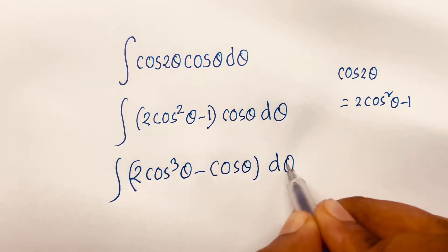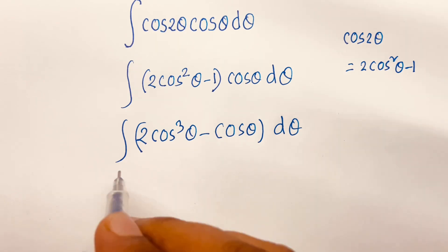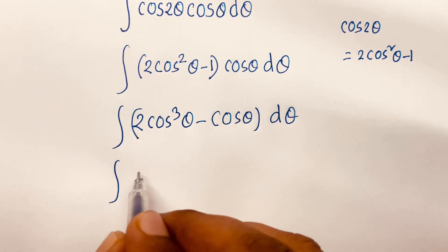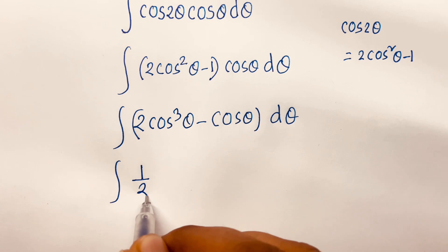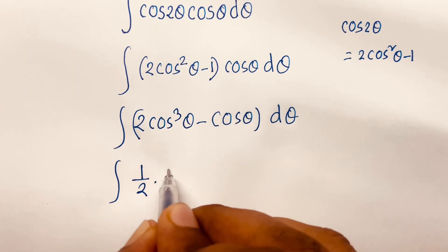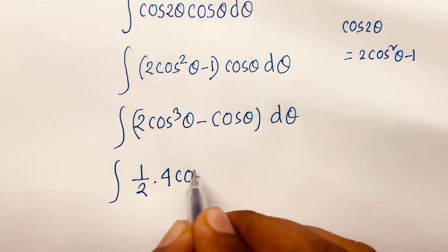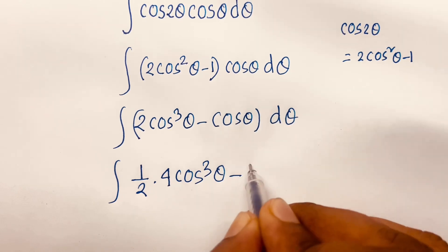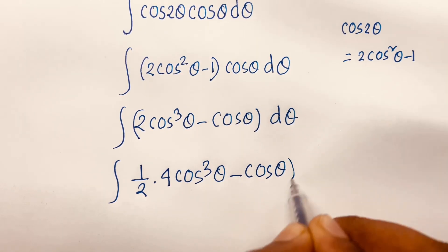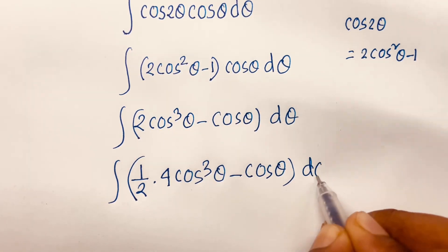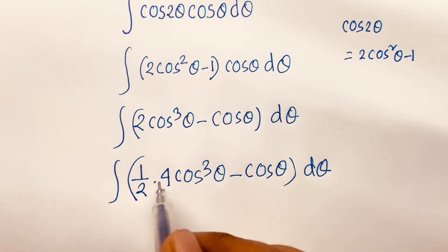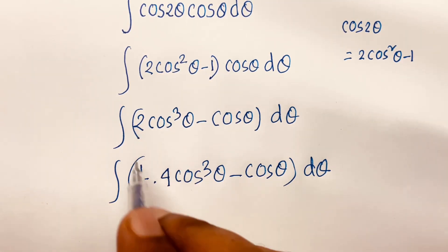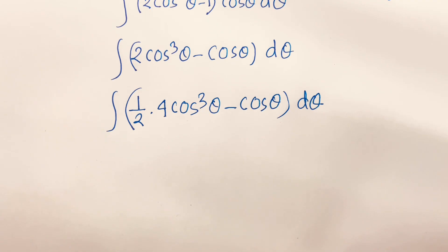I can write this as the integral of (1/2)·(4cos³θ - cos(θ)) dθ, because 4 divided by 2 equals 2, so there is no change in value.